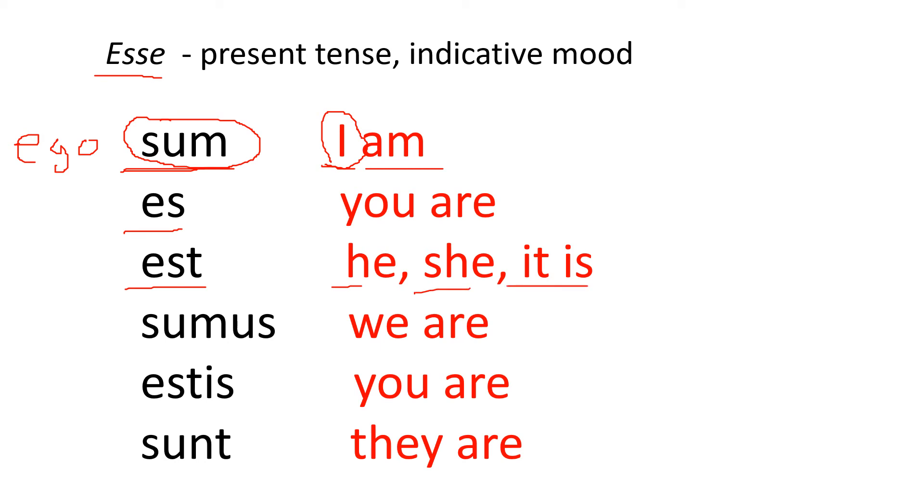Then we have sumus. Now with these words of two syllables, you always want to put the accent on that syllable right there, so it would be sumus. It would never be sumus, it would always be sumus, and that means we are. Then estis, and of course the accent would go right here, and that's you are in the plural.